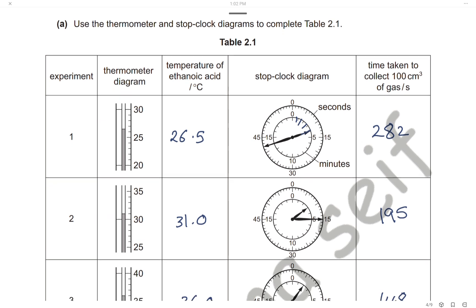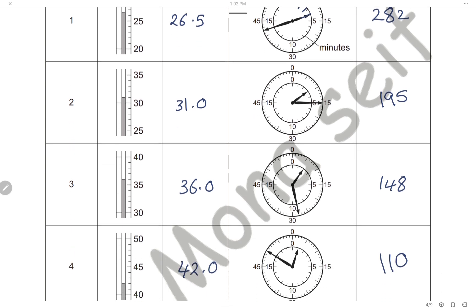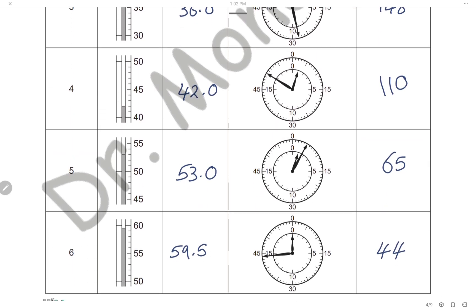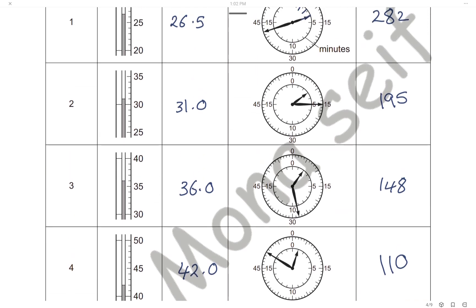We have the table to show the results, the thermometer diagram, and the stop clock diagram, and we should complete the table. The first thermometer reading is between 26 and 27, so it will be 26.5. Then 31, 36, 42, 53, and 59.5. All readings should be to 1 decimal place.